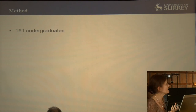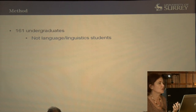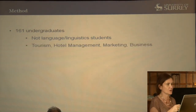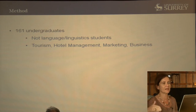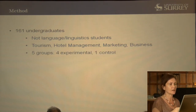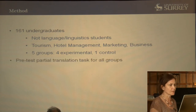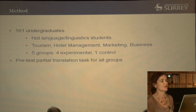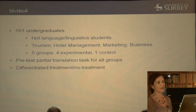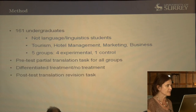Method: I worked with 161 undergraduates in Portugal — not language or linguistics students, but students studying tourism, hotel management, marketing, and business, all required to take two hours of English per week. Students were divided into five groups: four experimental and one control. I gave a pre-test partial translation task to all groups. For each experimental group there was a differentiated treatment, and then a post-test translation revision task.